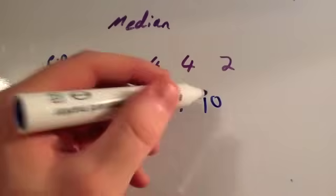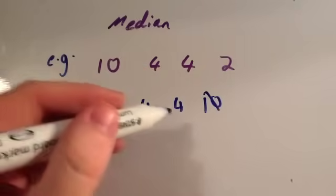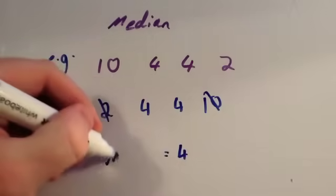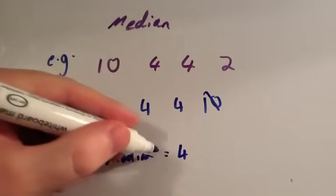Cross off the smallest and largest. This leaves you with 4 and 4 in the middle. If you've got the same number, in between 4 and 4 is going to be 4. So the median is 4.